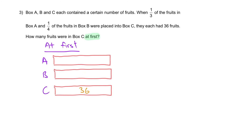Moving back: a quarter of the fruits in B were transferred to C. After giving away a quarter, you are left with three quarters. We know this whole remaining portion is 36, so each quarter is 12 — giving us 12, 12, 12, 12.